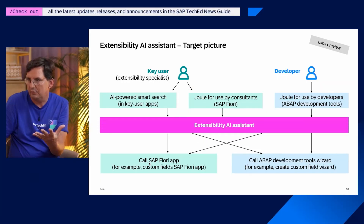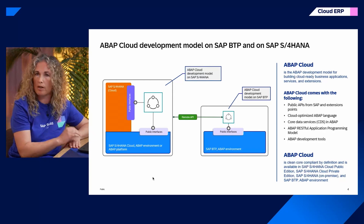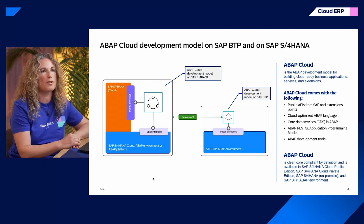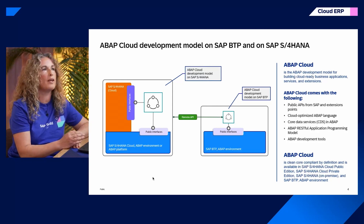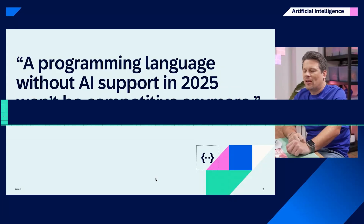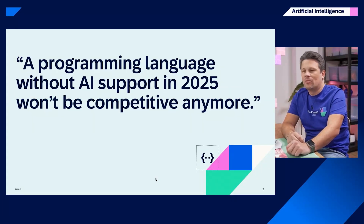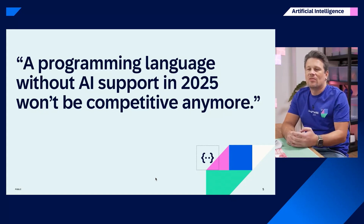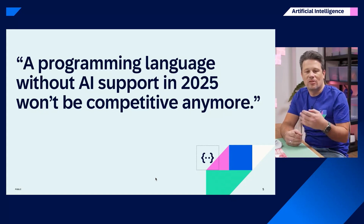The AI assistant will find the right tool, will find the right API. ABAP Cloud is clean-core compliant by definition and is available in all SAP S/4HANA editions and additionally in SAP BTP ABAP environment. We also think about how we can use AI for the custom transformation process. Programming languages without AI support won't be competitive anymore, and that's why it's really important to bring Gen AI support to the ABAP world.